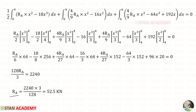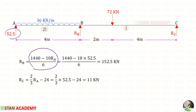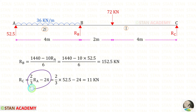After integrating and simplifying, we get RA = 52.5 kN. Substituting this value of RA into the expression for RB gives us RB, and substituting into the expression for RC gives us RC.